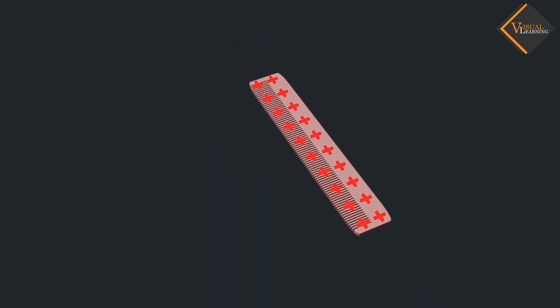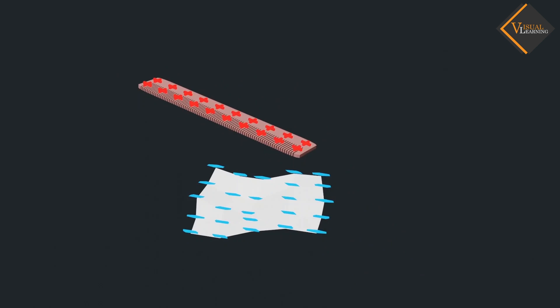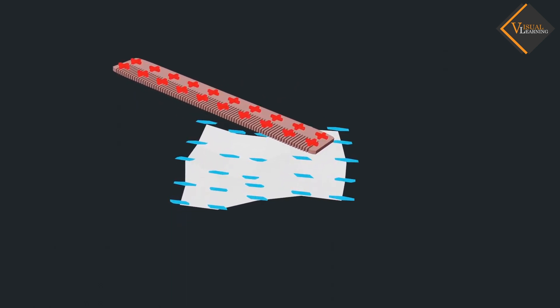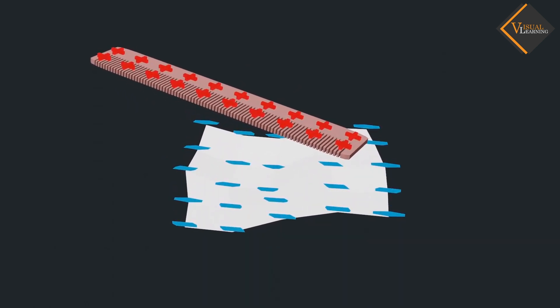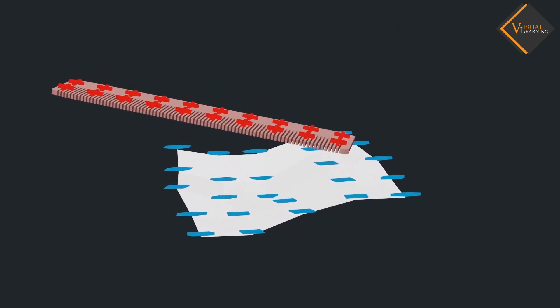So when we bring the comb near to the small piece of paper, positively charged comb attracts the negatively charged electrons which are in the piece of paper. And hence, the small piece of paper gets attracted towards the comb.